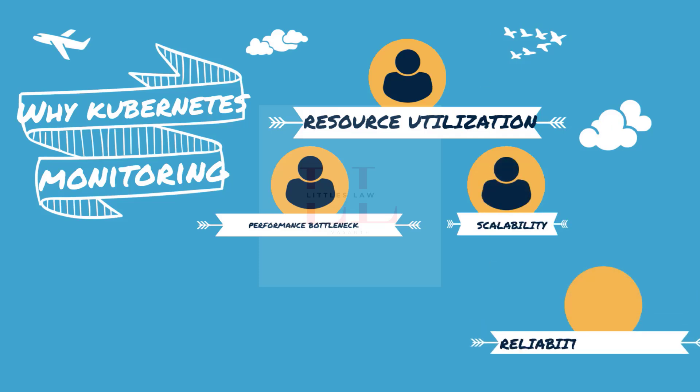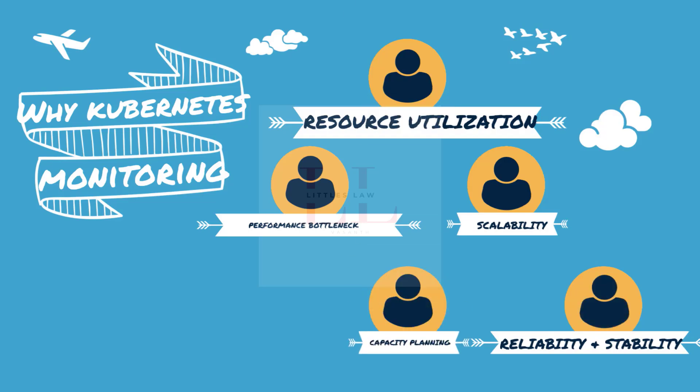The fourth reason is reliability and stability. The metrics we collect — CPU, memory usage, disk I/O — provide insights into the health and stability of your application and infrastructure. For example, high error rates might indicate an issue that has to be addressed before moving to production. Similarly, by monitoring key metrics you can proactively address issues before they lead to downtime or service disruption.